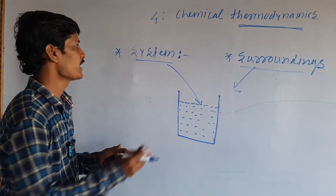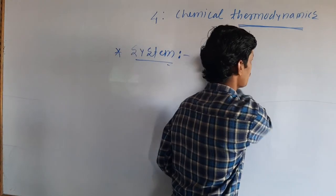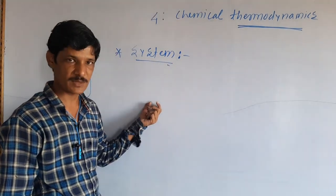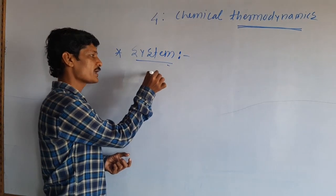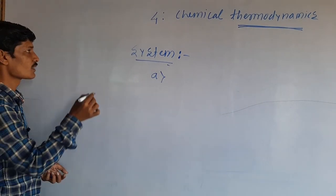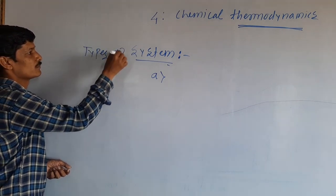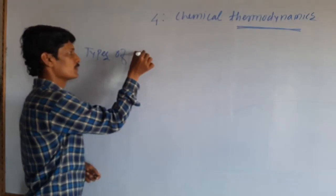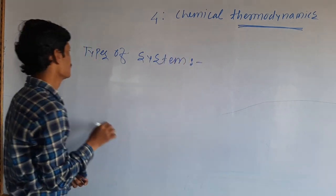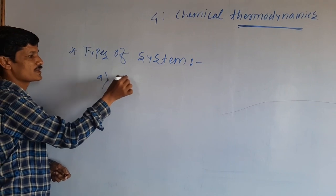In thermodynamics, we study the system in three types. There are three types of systems. Now we are going to learn about the types of systems. The first type of system is the open system.